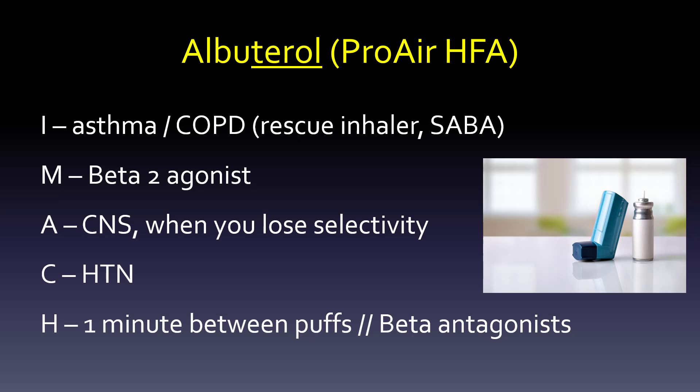With albuterol — again, this is for asthma and COPD, and this is the rescue inhaler, a short-acting bronchodilating agent. It's beta-2, opens up the two lungs. For CNS adverse effects: wasn't that beta-1? Well, you can lose selectivity if you take this too much, and that's when you get jitteriness and tremors. And hypertension can become an issue if you lose selectivity as well.